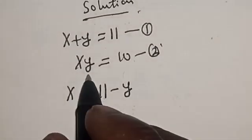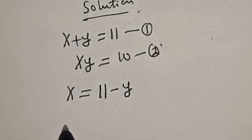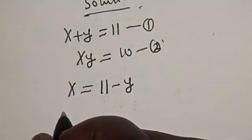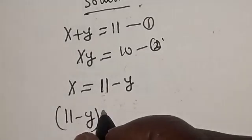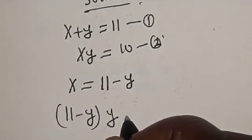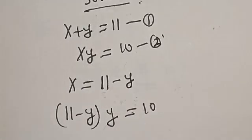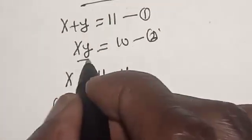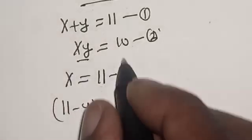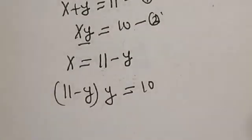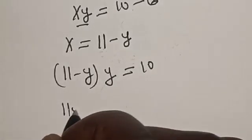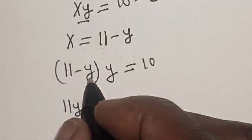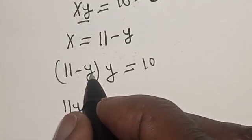Then, let's substitute for x in equation 2. That is, in equation 2, we have (11 minus y) into y is equal to 10. Let's open the brackets: 11 times y, that is 11y minus y times y.